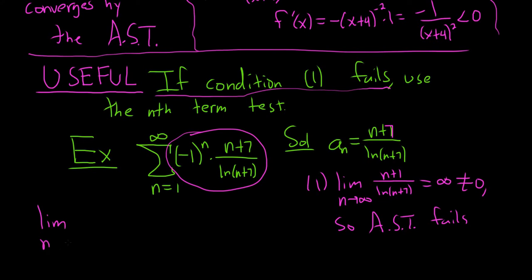So the nth term test says if you take the limit of this whole thing and it's not 0, then it diverges. So let's do it. If we take the limit of this entire thing here, n plus 7 over ln of n plus 7, what is this limit? Well, without the negative 1 to the n, we know this piece here goes to infinity. But this just makes it bounce back and forth, so it gets even worse. So it does not exist. So it's certainly not equal to 0, so it diverges by the nth term test.